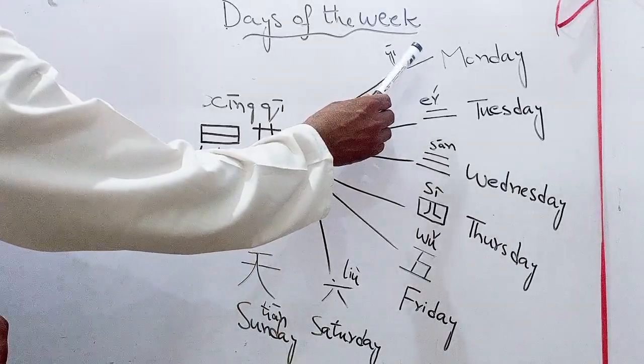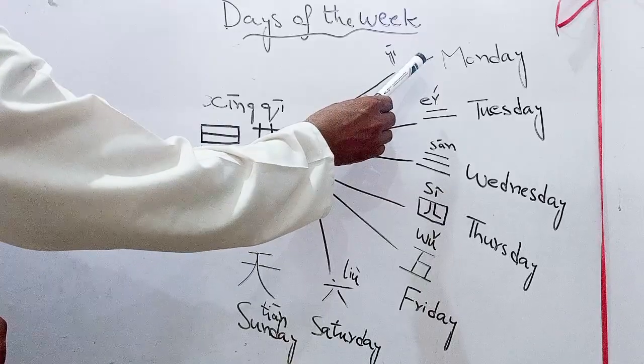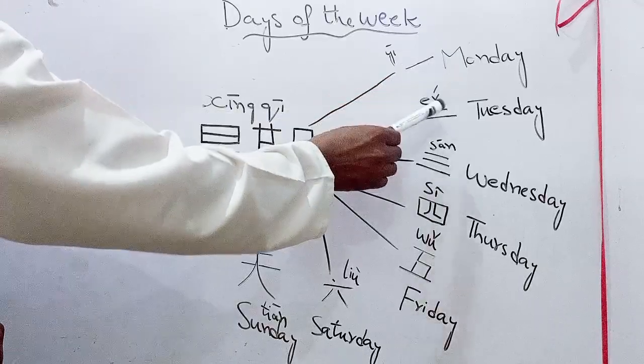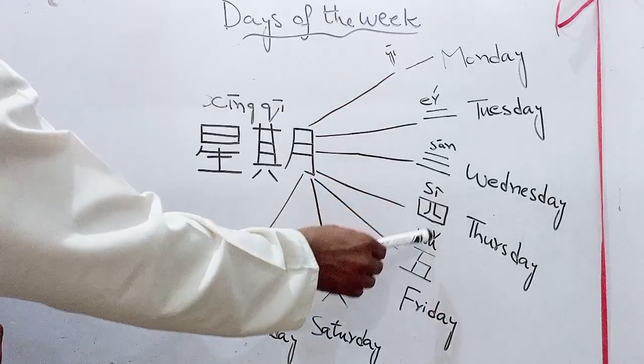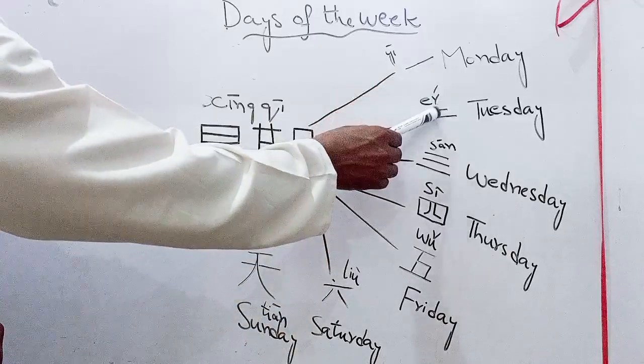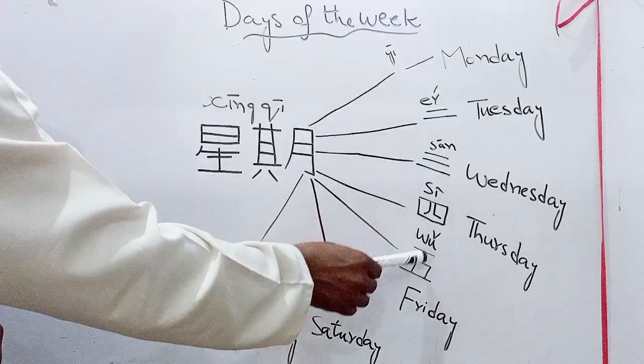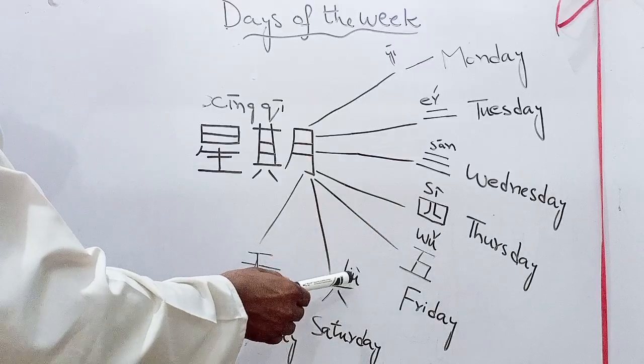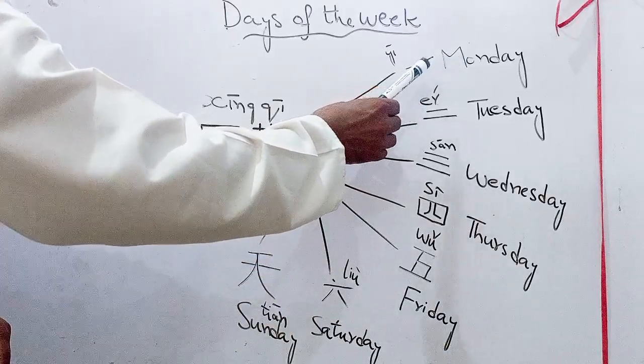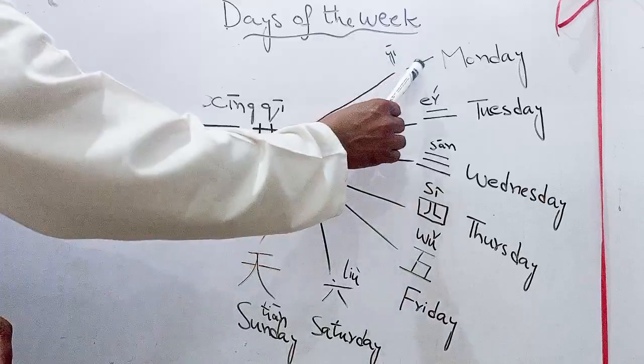When we learn counting in another video, we find that Yi means 1, 2, 3, 4, 5, 6, and these all counting correspond with days of the week.